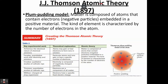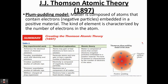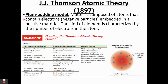JJ Thomson came up with a model called the plum pudding model. Thomson essentially said the atom is not an indestructible sphere — instead, there are actually different particles in there: negative particles, which are what we know as electrons today. The negative particles are embedded in a positive bun or positive sphere, which means the atom is made up of smaller parts: a positive sphere with little negative particles or electrons embedded within. Let's take a look at the experiment, and then we'll see why he called it a plum pudding model.